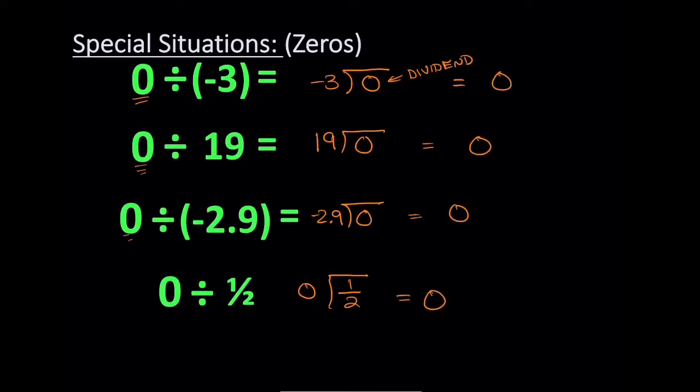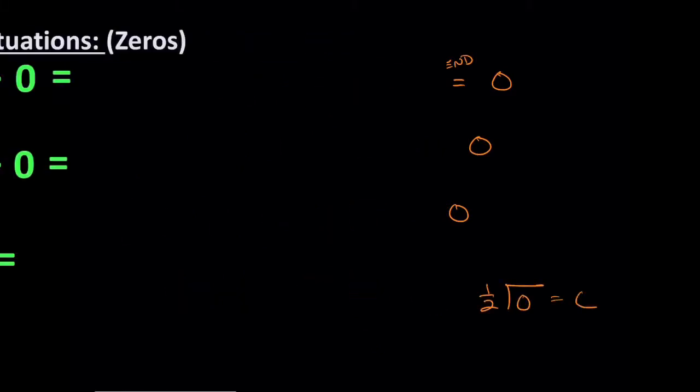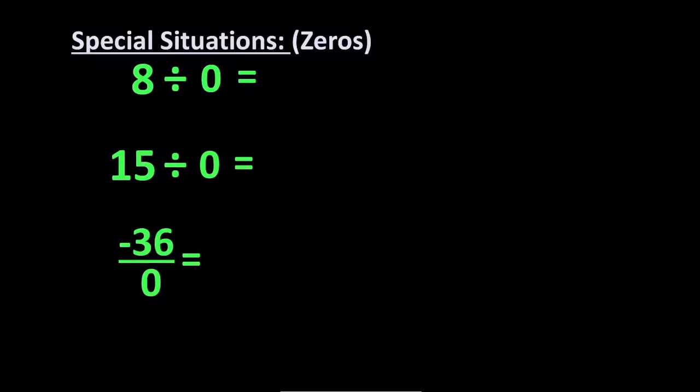So when you divide the dividend, when the dividend is zero and the divisor, that's the number you're dividing by, when the divisor is a non-zero number, you're going to get zero every single time. Doesn't matter if it's a fraction or a decimal. Oops, I just noticed I wrote that wrong. That should have been zero divided by one half, which again, that's an ugly way to do it. But still, now as expected, you probably know what's going to happen here.